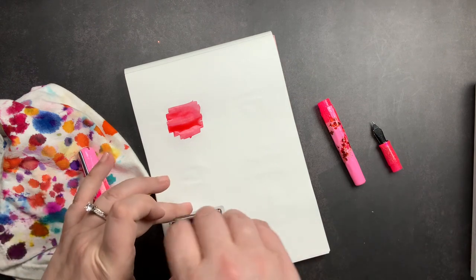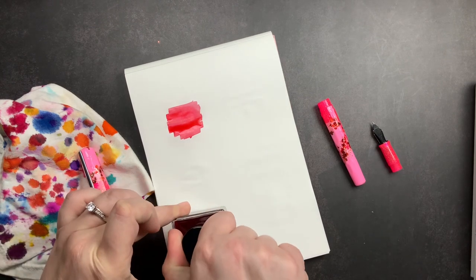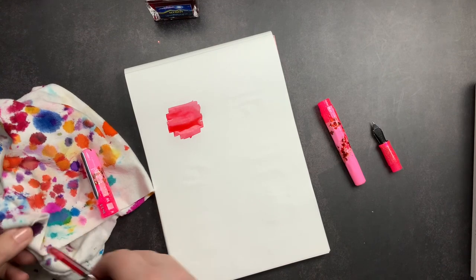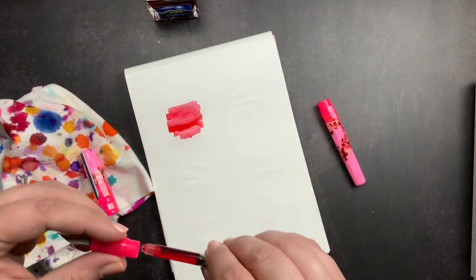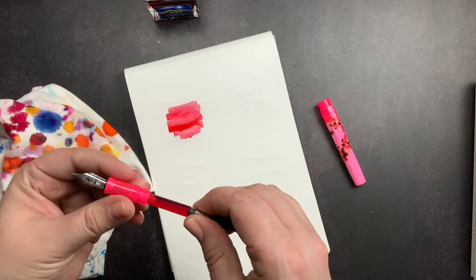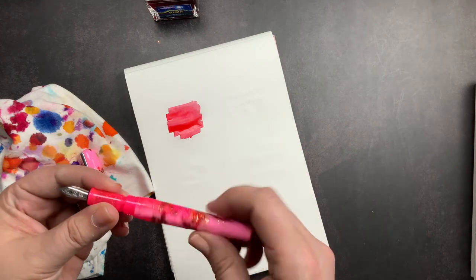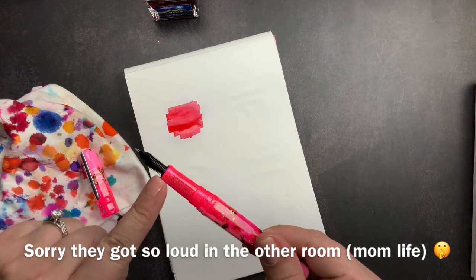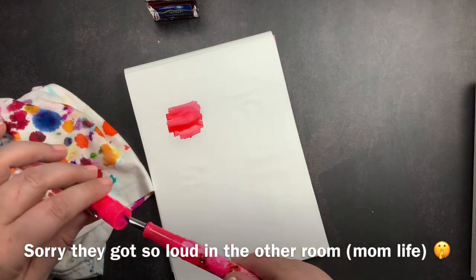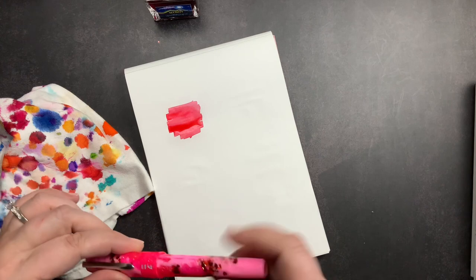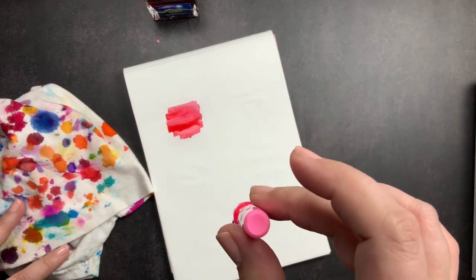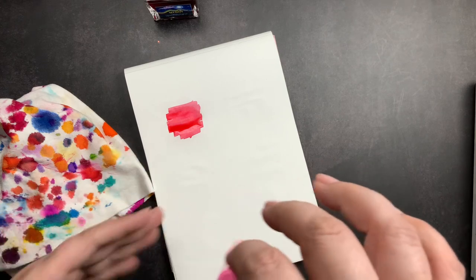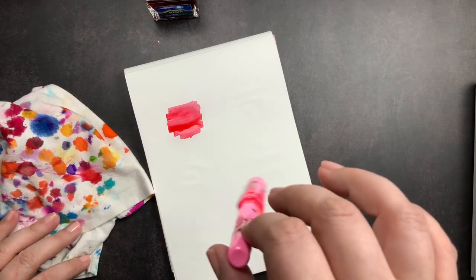Put my lid on, and that just seats back in there like that. Screw it on like that. And it will take a minute for the ink to travel down the feed. To speed that process up, you can let your pen sit upside down for just a few minutes, and gravity will just help pull it down the feed.